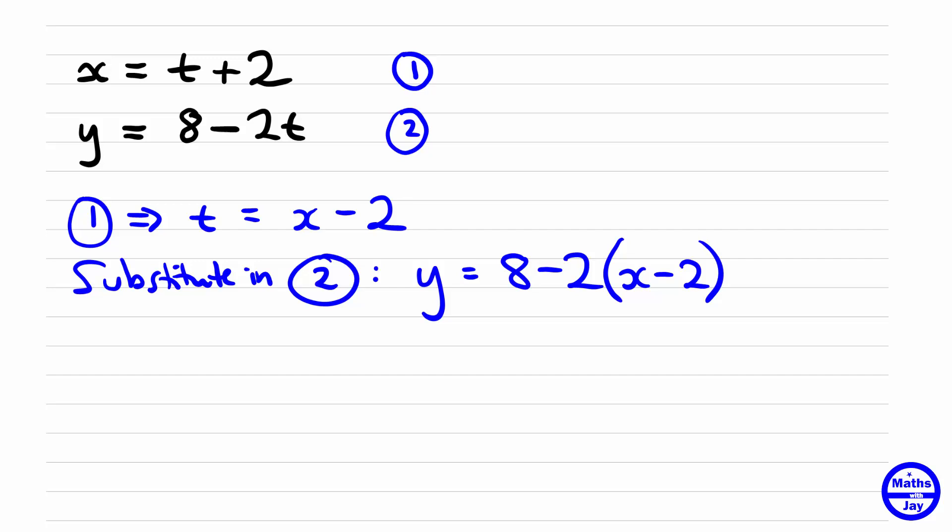We're going to multiply out the brackets and add together the 8 and the 4. So now we've got a nice equation. There's our Cartesian equation giving us y in terms of x, and we have eliminated t.